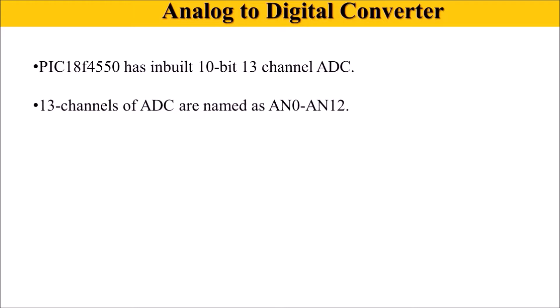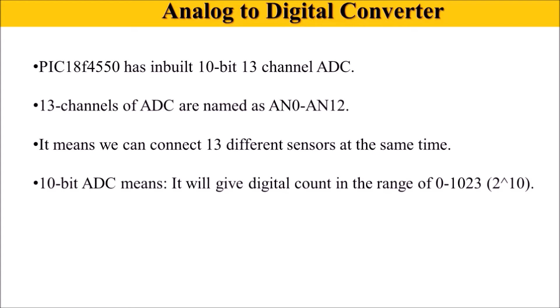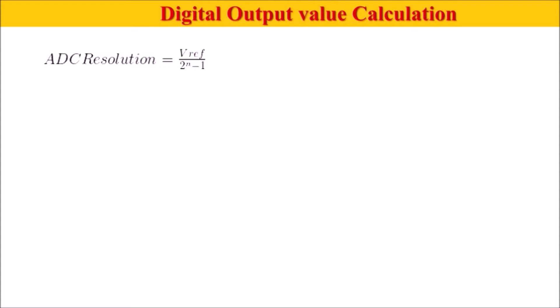The PIC 18F has a built-in 10-bit, 13-channel ADC. The 13 channels are named AN0 to AN12, so we can connect 13 different sensors to this ADC at a time. A 10-bit ADC means the digital output is 2 raised to the power 10, giving 1024 steps of digital output, ranging from 0 to 1023.